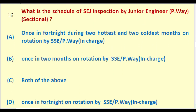What is the schedule of SAGE inspection by Junior Engineer Permanent Way Sectional? Options: once in fortnight during two hottest and two coldest months on rotation by SSE PW in charge; once in two months on rotation by SSE PW in charge; both of the above; once in fortnight on rotation by SSE PW in charge. The right answer is: both of the above.